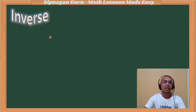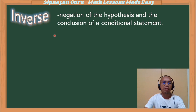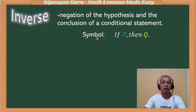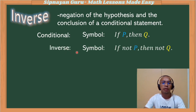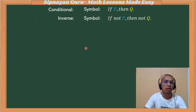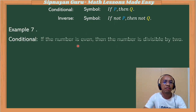Now, what is the inverse of an if-then statement? The inverse of an if-then statement is the negation of the hypothesis and the conclusion. If the conditional statement is if P then Q, now our inverse would be if not P, then not Q — if not hypothesis, then not conclusion.